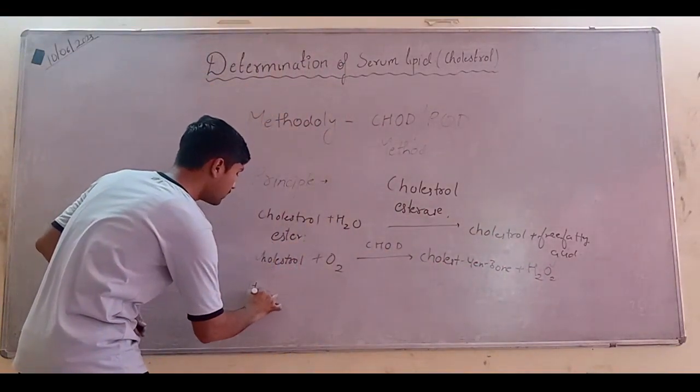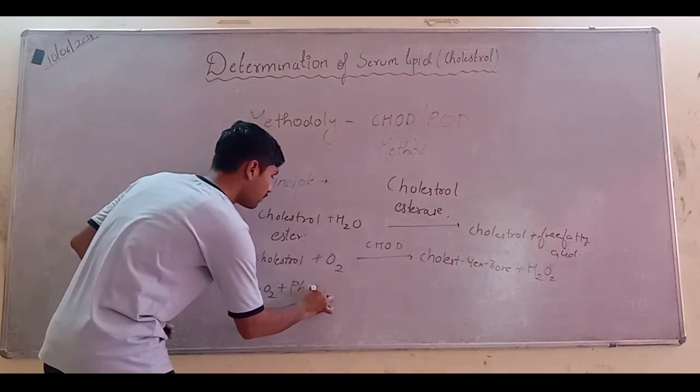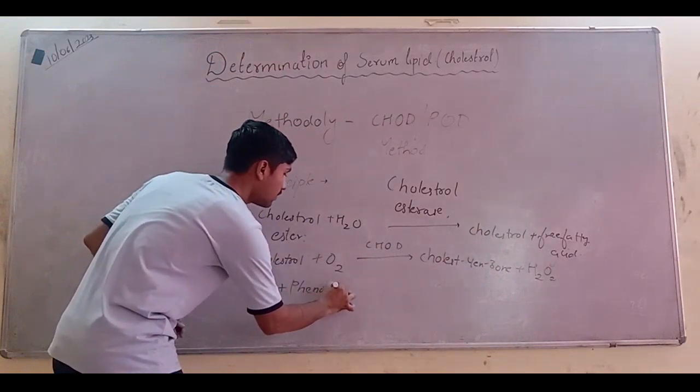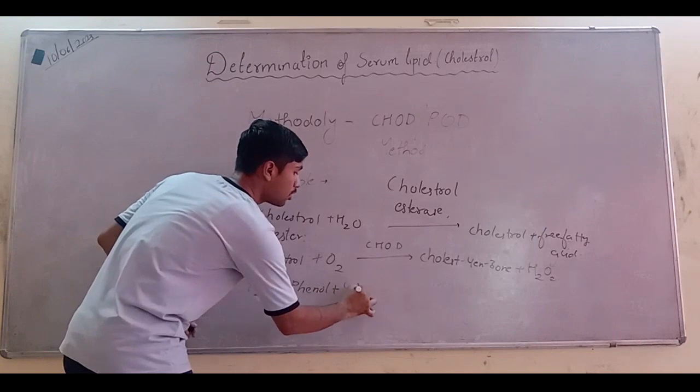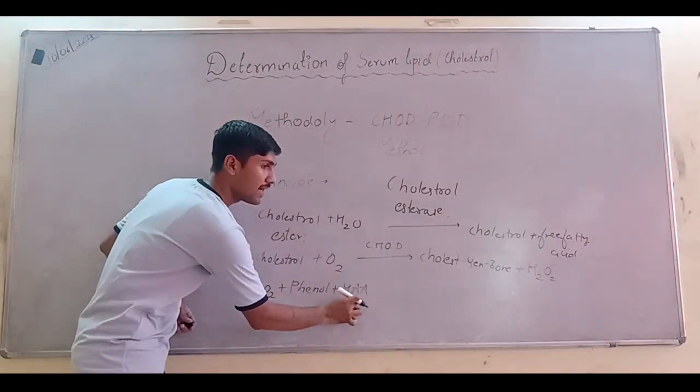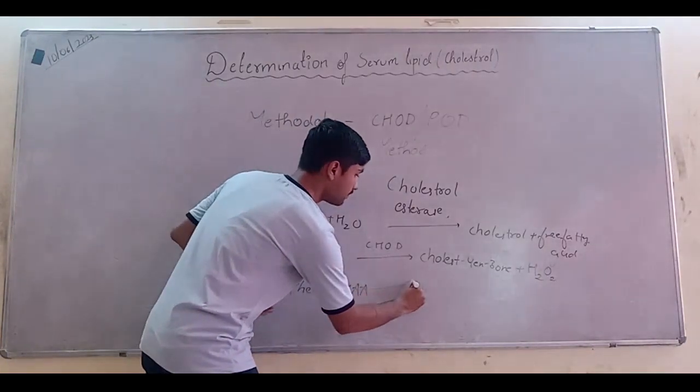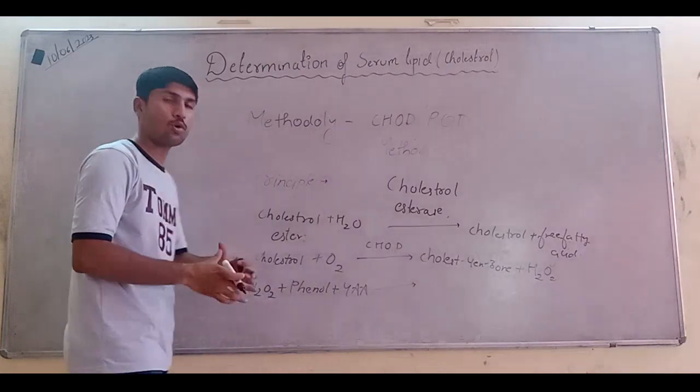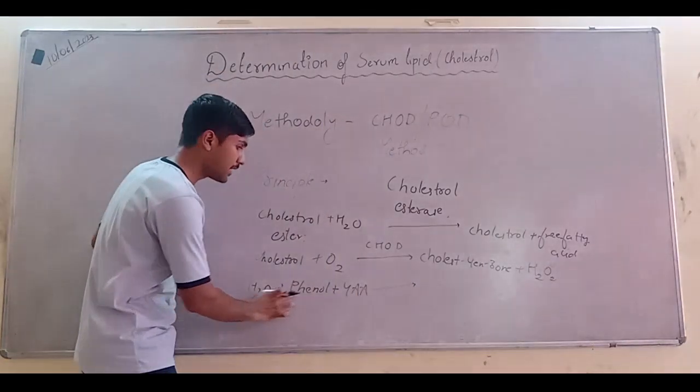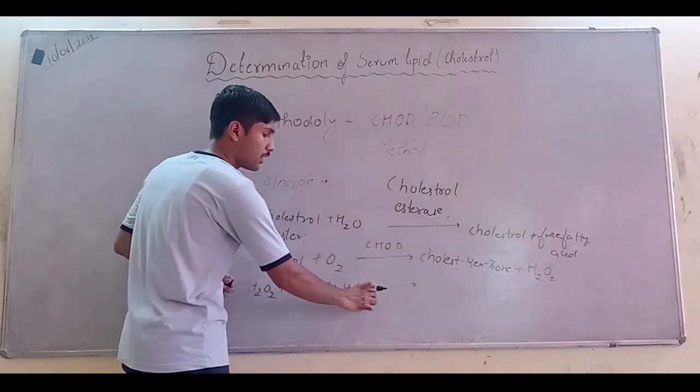Now this hydrogen peroxide reacts with phenol and 4-aminoantipyrine. What is this? 4-aminoantipyrine.